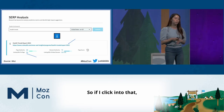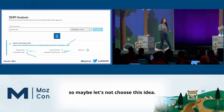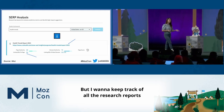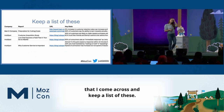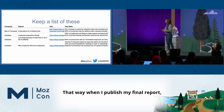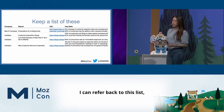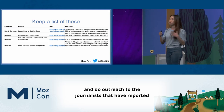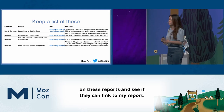So if I click into that, I can see the backlinks aren't that great. So maybe let's not choose this idea. But I want to keep track of all the research reports that I come across and keep a list. That way, when I publish my final report, I can refer back to this list and do outreach to the journalists that have reported on these reports and see if they can link to my report.